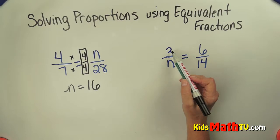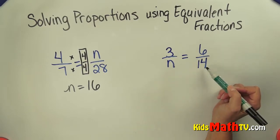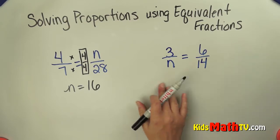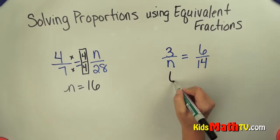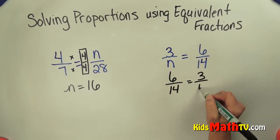Here's another example. 3/n equals 6/14. I can use equivalent fractions. I'm going to rewrite this, flip it over, as 6/14 equals 3/n.